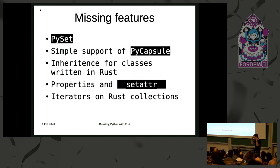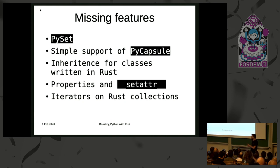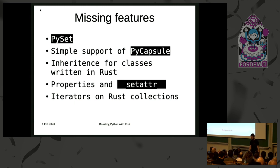But moving up abstraction layers, you need more powerful abstractions, and there were some missing features in our abstraction layer, rust-cpython. For example, there was no way of dealing with and creating Python sets, which is a very useful collection. There was also no support for capsules, so we kind of had to add that ourselves.